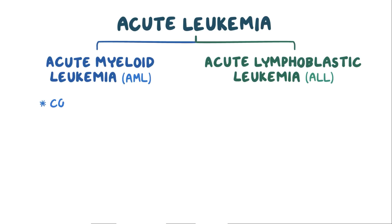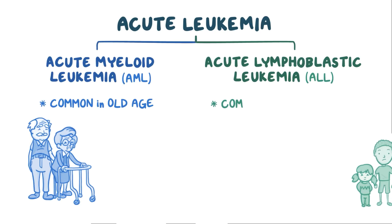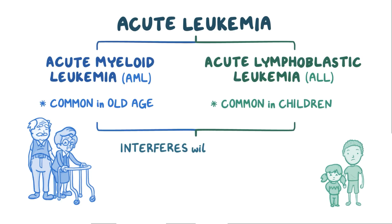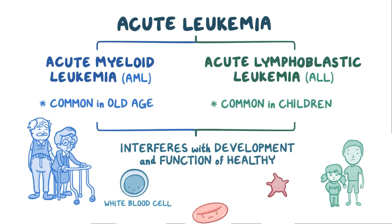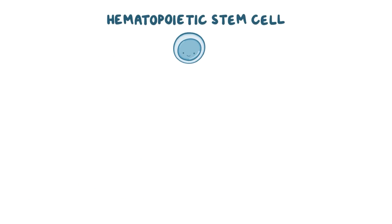AML is more common in old age, whereas ALL is more common in children. In both cases, accumulation of blast cells interferes with the development and function of healthy white blood cells, platelets, and red blood cells. Every blood cell starts its life in the bone marrow as a hematopoietic stem cell.